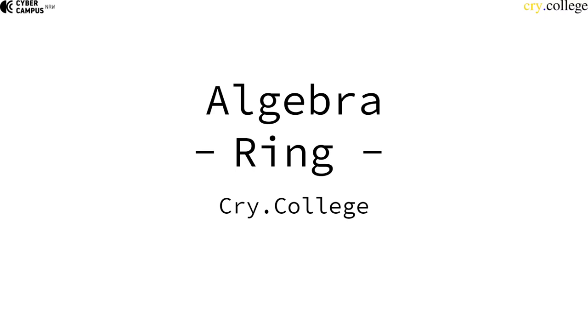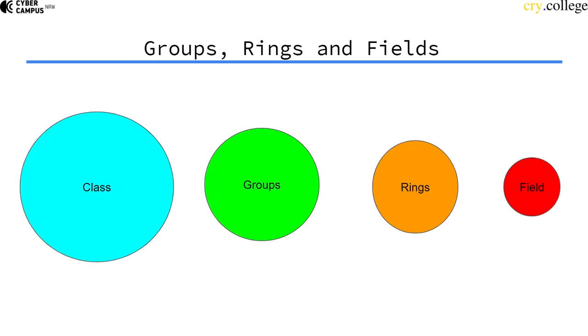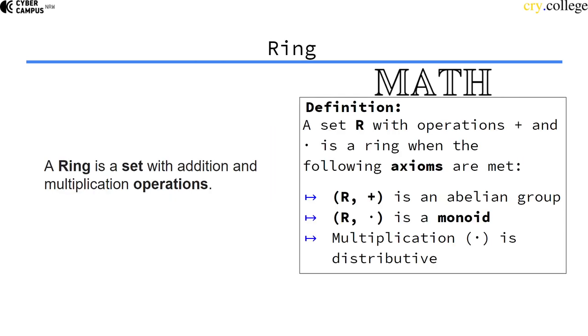So the next algebraic structure that we want to look at are rings. Rings are more specific than groups but quite similar. A ring is a set, just like a group, but it has two operations: one we usually denote as addition and one as multiplication.